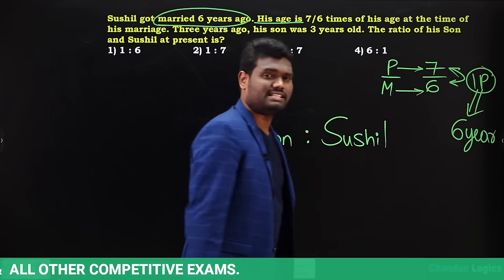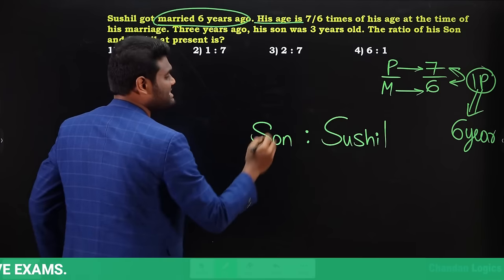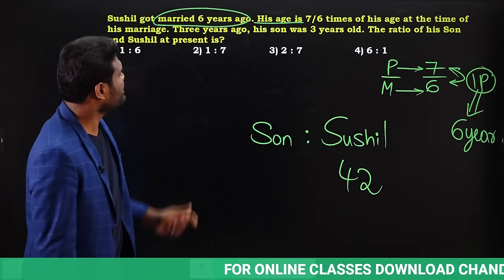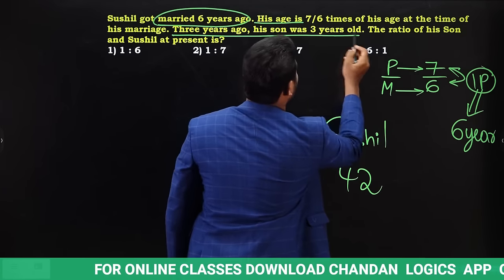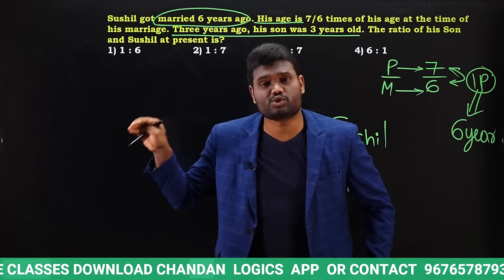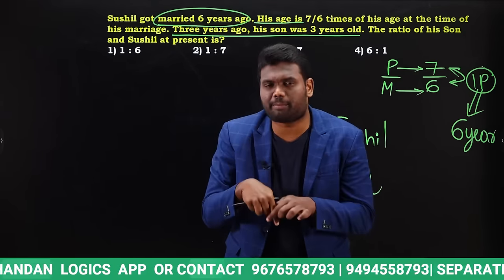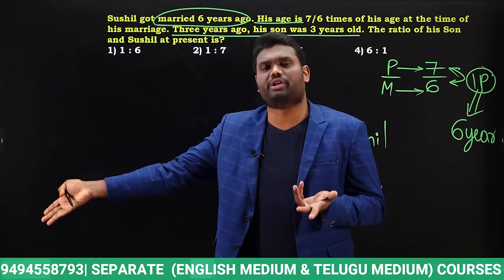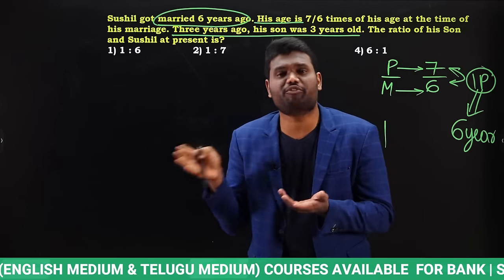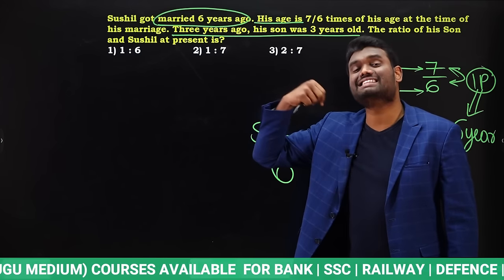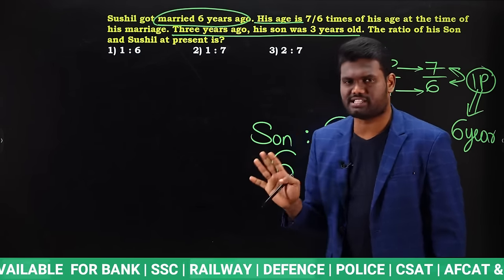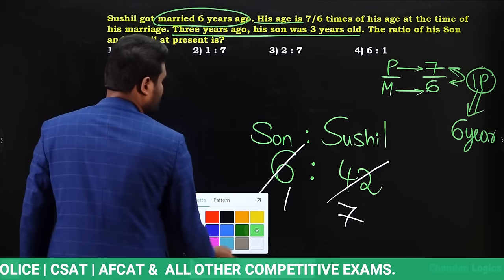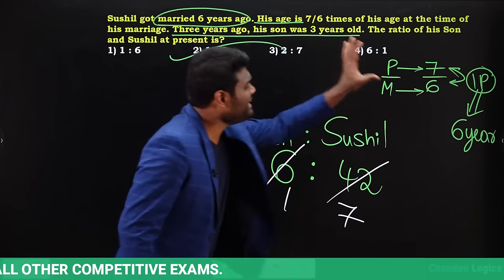Sushil's present age is 7 parts = 7×6 = 42 years. Three years ago his son was 3 years old, so son's present age is 3+3 = 6 years. The ratio of son's age to Sushil's age is 6:42 = 1:7. Complete information was given directly in the question — no rough work needed.